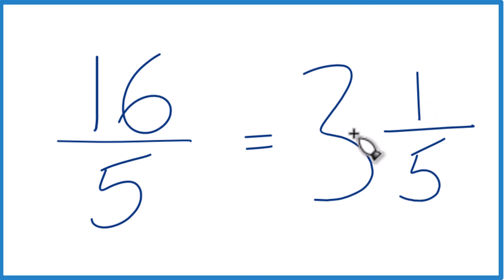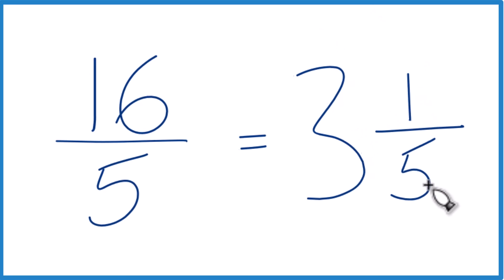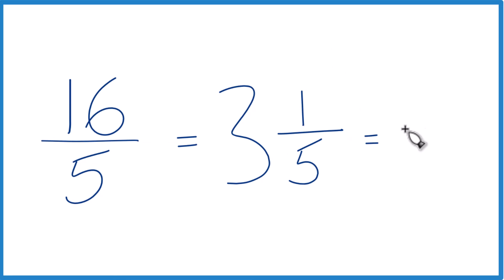Let's check our work though because 3 times 5, that's 15 plus 1. That equals 16. And we just bring the 5, bring that denominator across. And we get 16 fifths again. So we know we did it right.